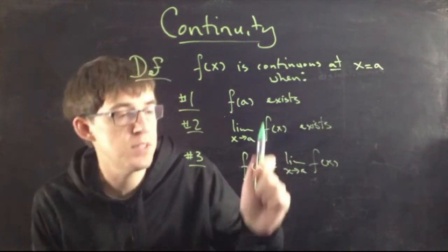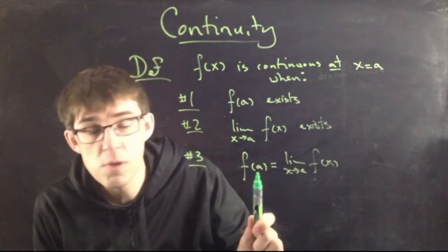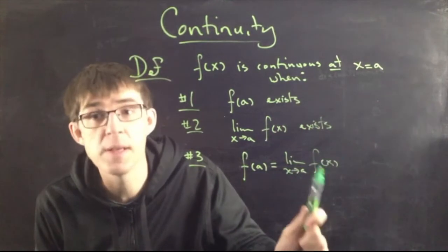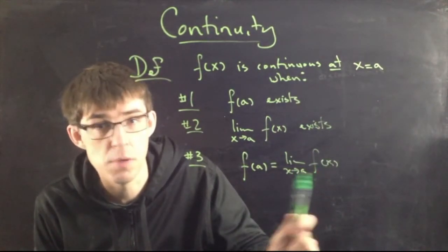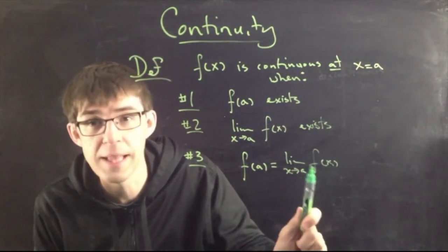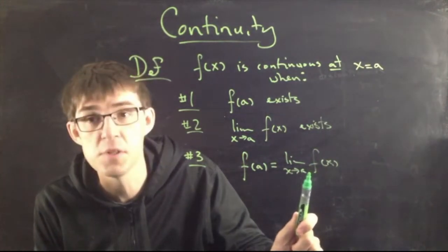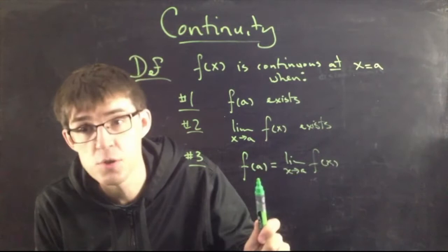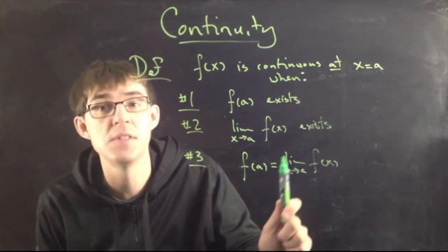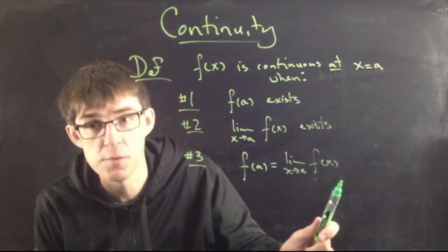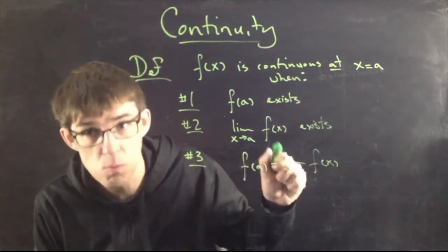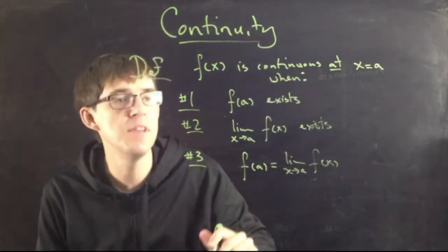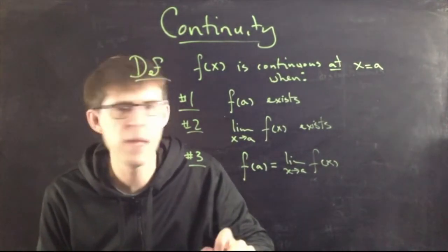What this means is: when you look at that particular point, the Y value that you get is actually the same as the Y value that the curve goes to. And that's what it means to say the line is unbroken — there is no hole or jump in the function. The curve actually goes to where it's supposed to go. This is the definition of continuity.